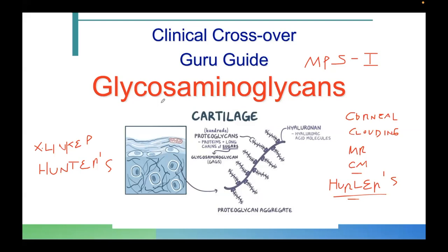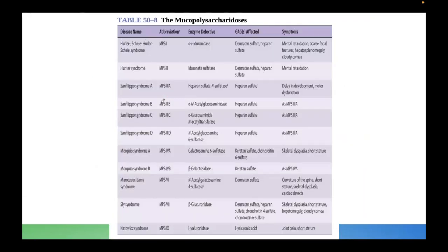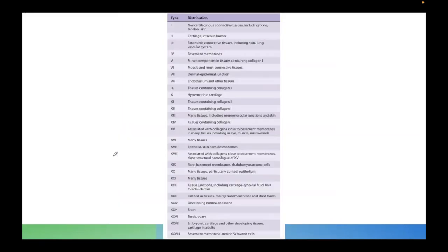You're going to encounter GAGs such as chondroitin sulfate, heparan sulfate. Let me share this table. Very important table from Harper's. So here's Hurler's. It's MPS1. Here's the mental retardation. Here's the corneal clouding. The coarse facial features. So this is the term gargoylism. These are the two GAGs which are affected. Dermatan sulfate and heparan sulfate. Here's Hunter's, which is MPS2. This is deficiency also of the same GAGs. Dermatan sulfate and heparan sulfate. All the others, you don't have to memorize.